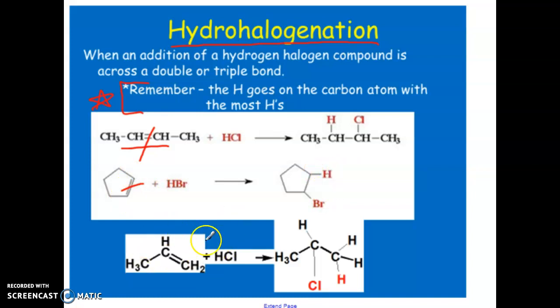But in this particular case, we have a double bond, and there is an unequal amount of hydrogens. The center carbon has one hydrogen, and the carbon on the end has two. So what that means is the hydrogen will actually go to the carbon that has more hydrogens, and the chlorine will go on to the other one, or whatever the halogen happens to be.